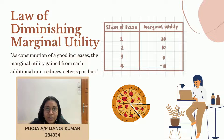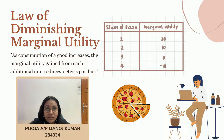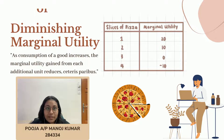For example, if person A is hungry, the first slice of pizza eaten will offer the highest utility. But as the number of slices consumed increases, person A becomes less and less hungry, making each additional slice less satisfactory — thus proving the law of diminishing marginal utility.